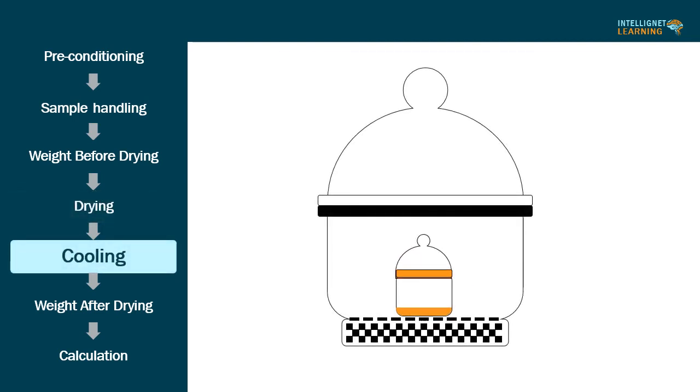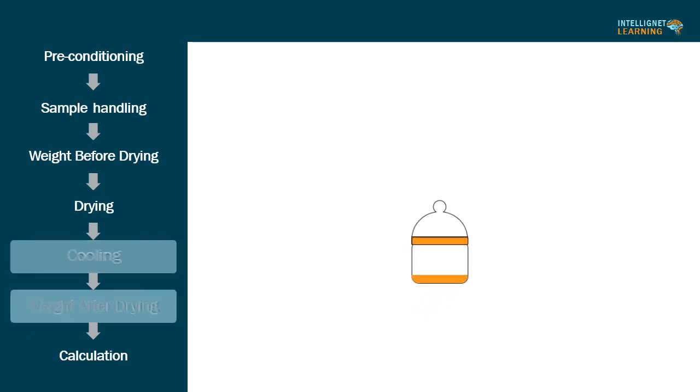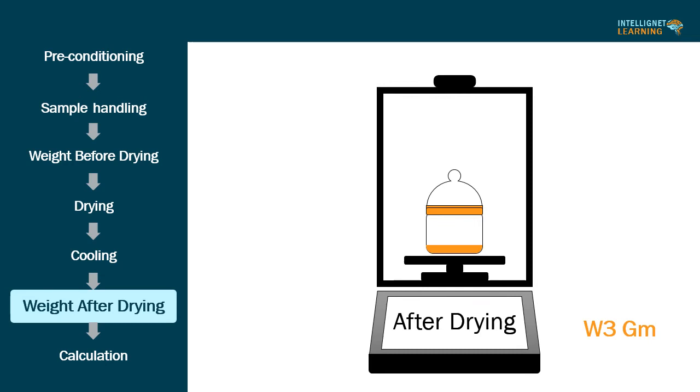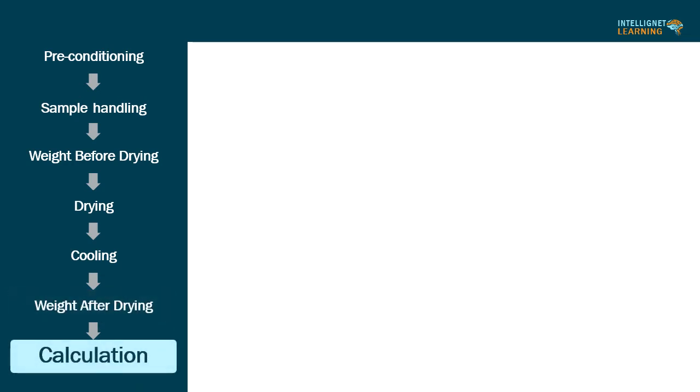Fifth step, cooling: Upon opening the chamber, reapply the same stopper to the bottle and allow it to come to room temperature in a desiccator. Sixth step, weight after drying: Weigh the loaded bottle.